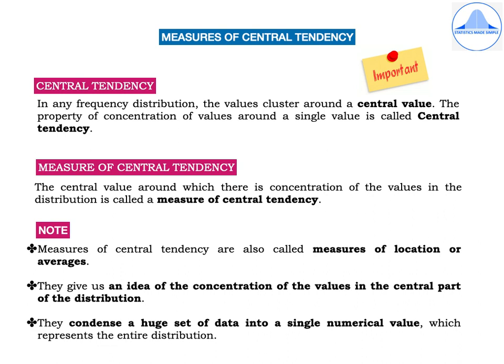So in the example which I just explained, the age 16 years of a first PUC student which is the central value around which you have different ages of first PUC students clustering is called as a measure of central tendency. So in our example, the age 16 years of a first PUC student is called as a measure of central tendency.